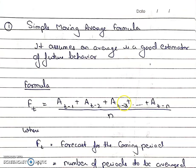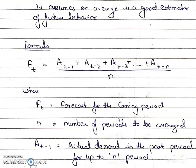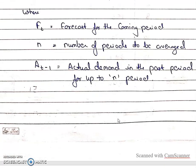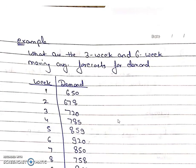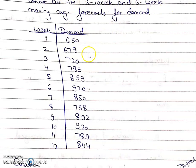Let's start with the simple moving average method. In simple moving average method, it is assumed that the average is a good estimator of future behavior. The formula is: FT equals (A(t-1) + A(t-2) + A(t-3) + ... ) divided by N, where FT is the forecast for the coming period, N is the number of periods, and A(t) is the actual demand in the past period. In this example, we have data of 12 weeks and we have to calculate forecast for the 13th week using 3-week and 6-week moving average methods.